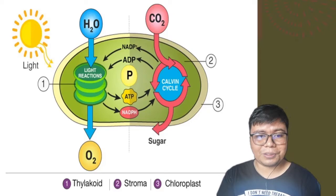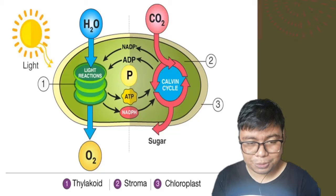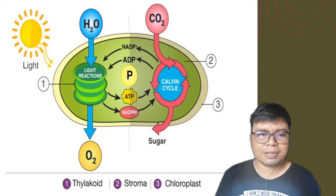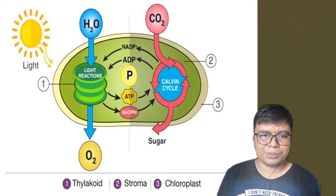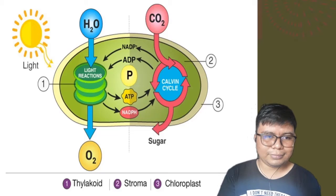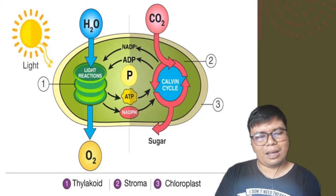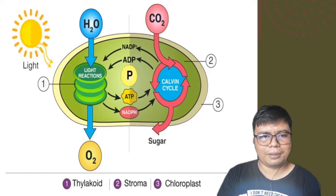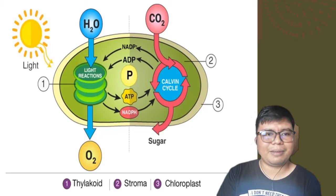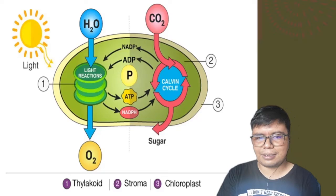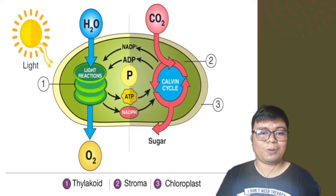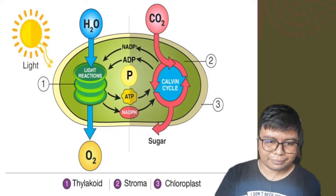In this diagram, you can see that oxygen molecules are manufactured during the light reaction, while sugar is produced during the dark reaction. In light reaction, what is needed is only water and light. But during the dark reaction, carbon dioxide is needed. In the next slide, I will explain more clearly what the light reaction and dark reaction are.